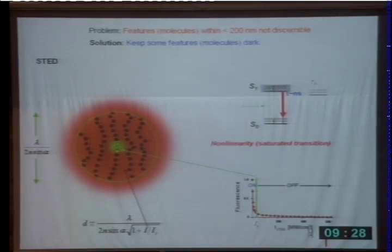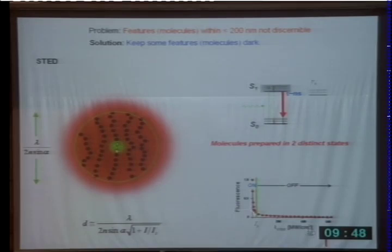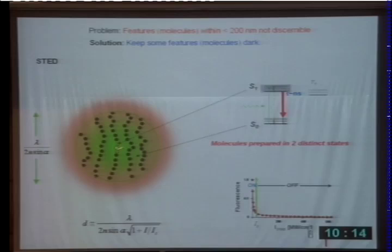I agree you can describe it as a saturated transition, but the only purpose of this beam is to get the molecules to a different state. Keep some here in the ground state, do not allow them to assume S1, whereas in here they are forced to assume S1. Here they are in S0, here in S1. Because we prepare the molecules in two different states, we can separate them. Although all are flooded with excitation light, they are in different states — some can send light back, some cannot. Because these can send light back, we can separate them from the rest. That is the whole story in a nutshell.